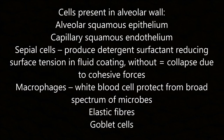Cells present in the alveolar wall include alveolar squamous epithelium, capillary squamous endothelium, and septal cells which produce a detergent surfactant that reduces surface tension in the fluid coating — without this, alveoli would collapse due to cohesive forces. Also present are macrophages, which are white blood cells protecting against a broad spectrum of microbes, and elastic fibres and goblet cells.